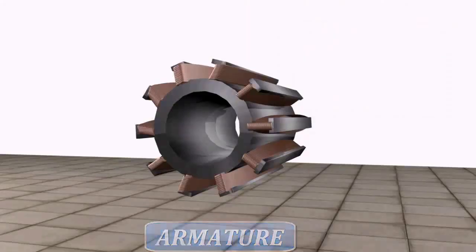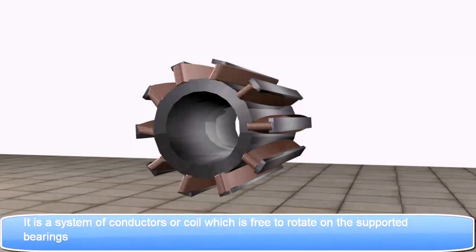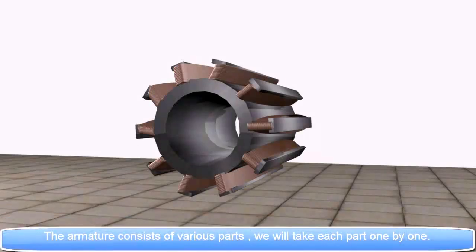Armature. It is a system of conductors or coil which is free to rotate on the supported bearings. The armature consists of various parts. We will take each part one by one.